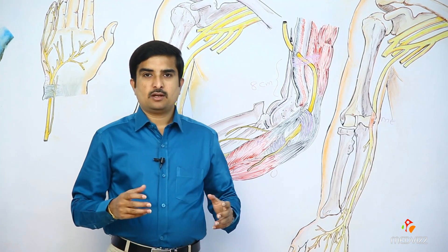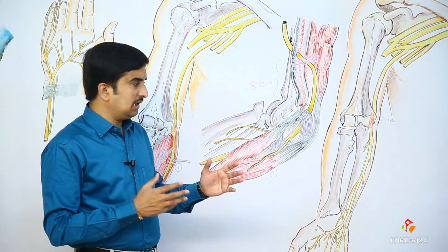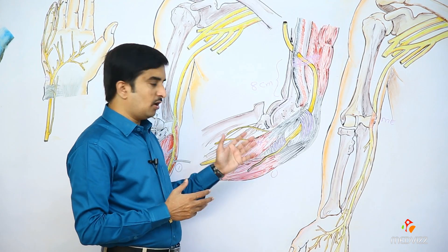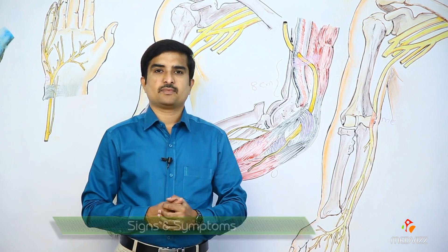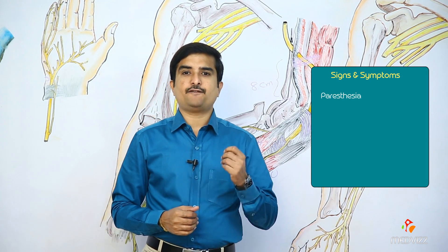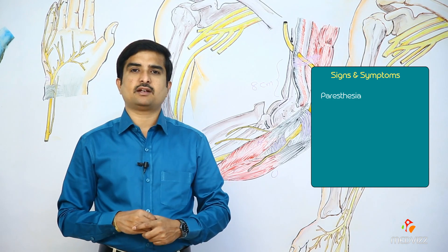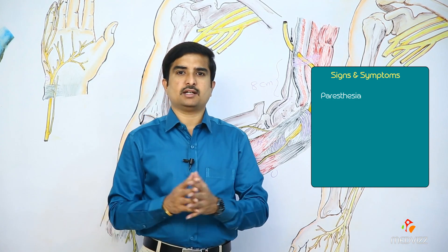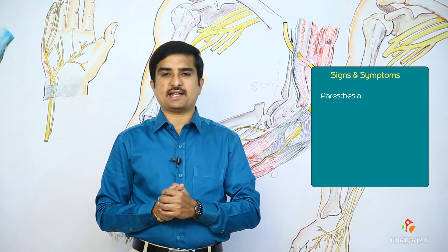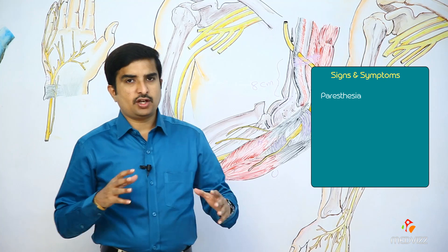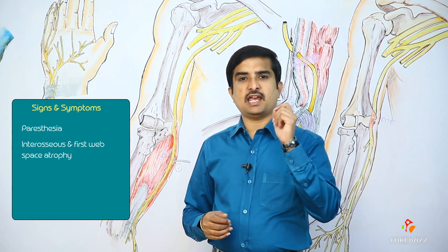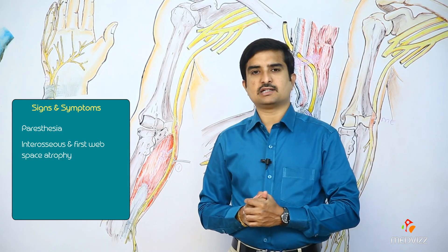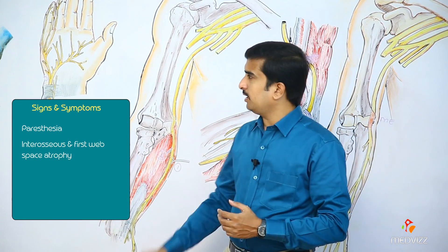Whatever the cause of compression, the ulnar nerve is compressed in the cubital tunnel, behind the aponeurosis, or at the arcade of Struthers. The main signs and symptoms include paresthesias of the small finger and the ulnar half of the ring finger, and the ulnar dorsal hand. The interosseous muscles are innervated by the ulnar nerve, and first web space atrophy is a classical feature of cubital tunnel syndrome.